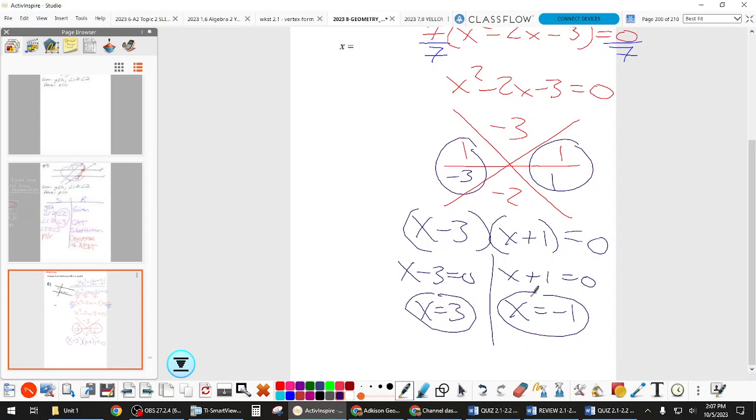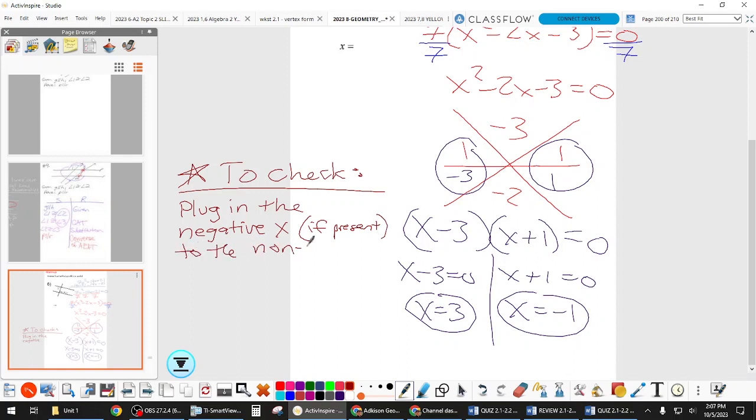So are we done? No. That's an algebraic solution, and we need to go make sure it works geometrically, right? Some people have asked me what's the best way to check. So here's my advice. And if you have this on your warm-up, you should write it down. The best way to check. It's not the only way, but it is the best way. Okay. Plug in the negative, if there is one, plug in the negative X, if you have it, to the non-squared expression. Why would I say plug that into the non-squared expression?